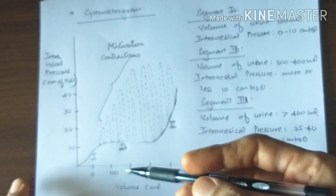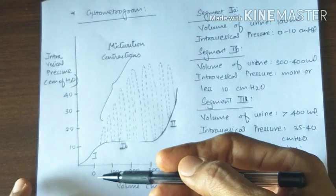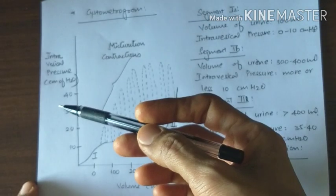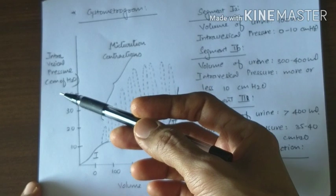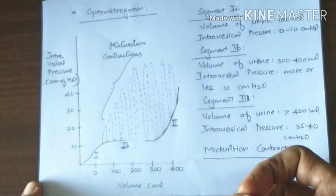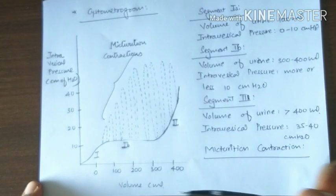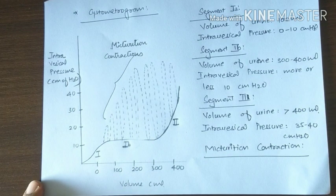This kind of graph is obtained when we plot intravesical pressure and intravesical volume. This graphical recording is known as a cystometrogram.